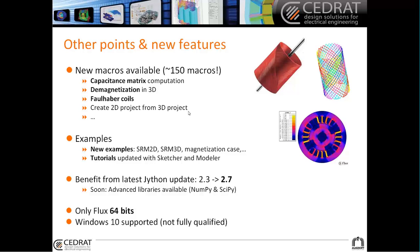If you choose a cut plane, you can create directly a 2D project from it. We have more macros going on. We also added examples for SRM 2D — the Switched Reluctance Machine — inside the Supervisor, a magnetization case, and more. All tutorials have been updated using the sketcher and the modeler so you can learn how to do all these examples with the latest geometry tools.